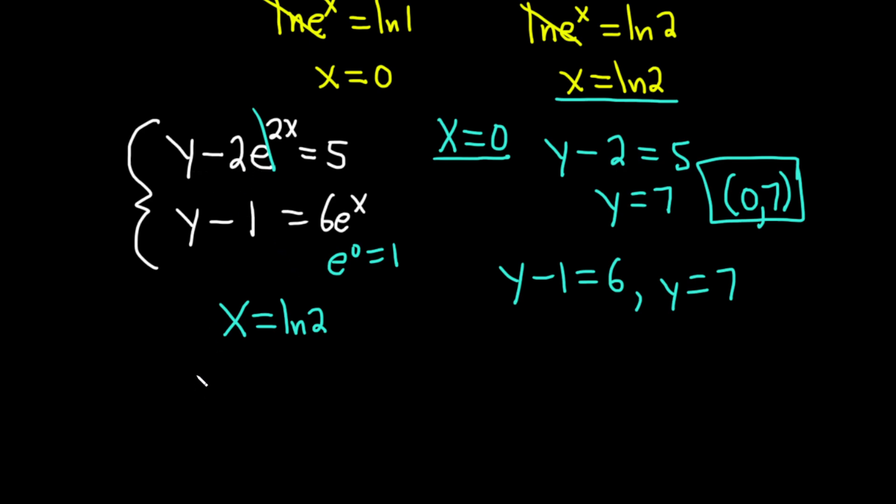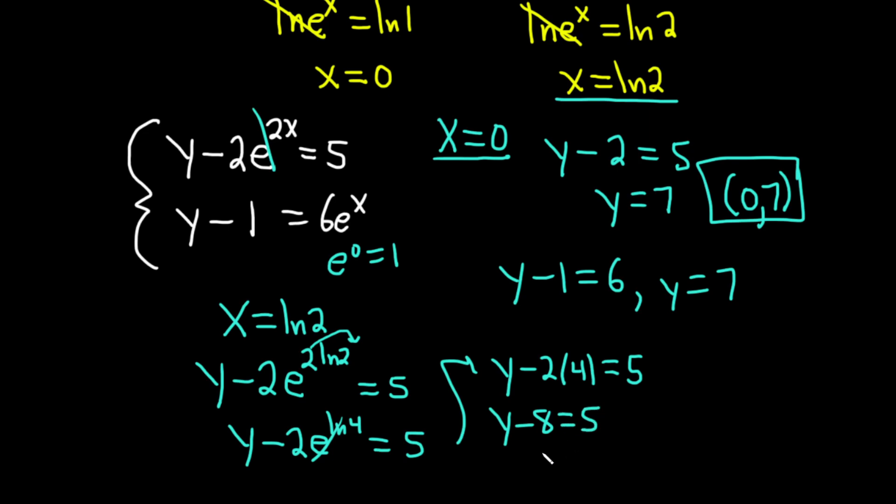And so if we plug it into the first one, we get y minus 2, e to the 2 ln 2, and that's equal to 5. So now we're going to use properties of exponents. I'm going to take this 2 and bring it up using the power rule for logs. So this is y minus 2, e to the ln 4, and that's equal to 5. And this is cool because these cancel. So we get y minus 2 times 4 equals 5. So that means that y minus 8 equals 5. So y is 13.